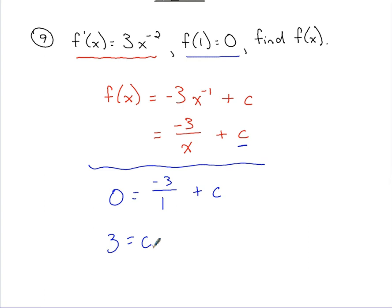Kind of bringing this all together now, I would conclude that the original function f of x equals this negative 3 over x plus c, which I found to be 3. And that would be my answer.